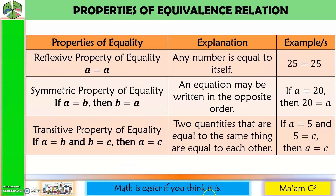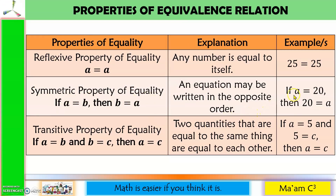These three properties of equivalence focus on the idea that quantities on both sides of the equation mean the same thing — they are equal, and it doesn't matter which one is on which side. The first is the reflexive property: a number is equal to itself, like a mirror. The second is the symmetric property: an equation can be written in opposite order. If A equals 20, then 20 equals A. This is used when we rewrite the variable to the left side.